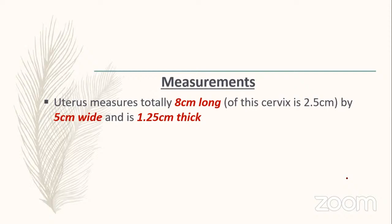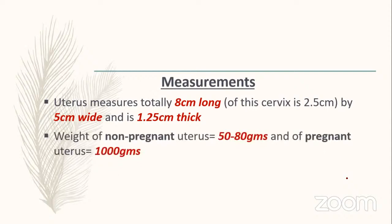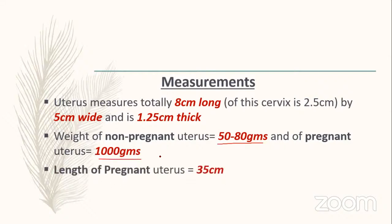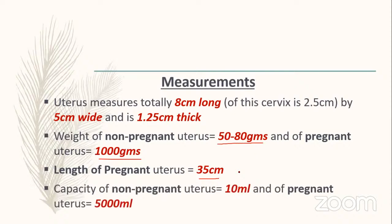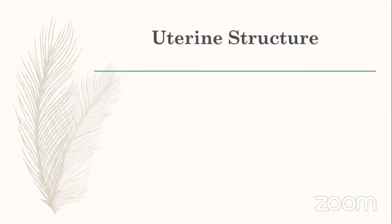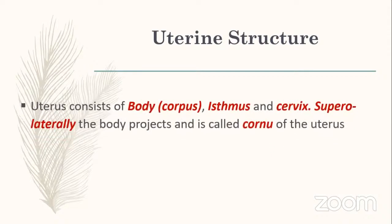Measurements: total length of the uterus is 8 cm; cervix is 2.5 cm; width is 5 cm; thickness is 1.5 cm. Weight of a non-pregnant uterus is 50–80 g; pregnant uterus is 1000 g. Length of the pregnant uterus is 35 cm. Capacity of the non-pregnant uterus is 10 mL; pregnant uterus is 5000 mL.